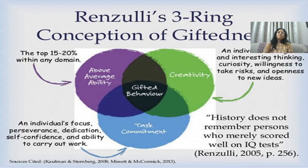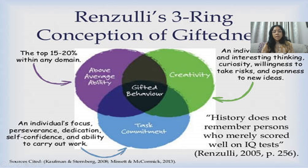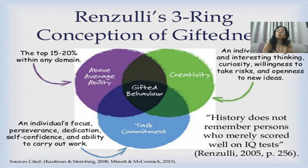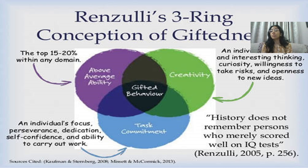Diagram से आप बेहतर समझ सकते हैं - यह Renzulli's three ring conception of giftedness है। एक ring above average ability की है - the top 15 to 20 percent within any domain। फिर creativity की ring है - individuals with original and interesting thinking, curiosity, willingness to take risks and openness to new ideas। यानी बिना test administer किए भी समझ सकते हैं कि आप creative हैं कि नहीं - क्या कुछ original सोचते हैं, curiosity है, risk लेने के लिए तैयार हैं, नए विचारों के प्रति openness है।